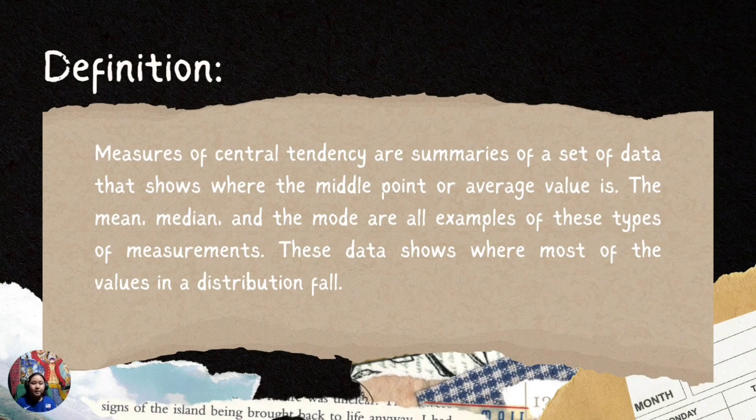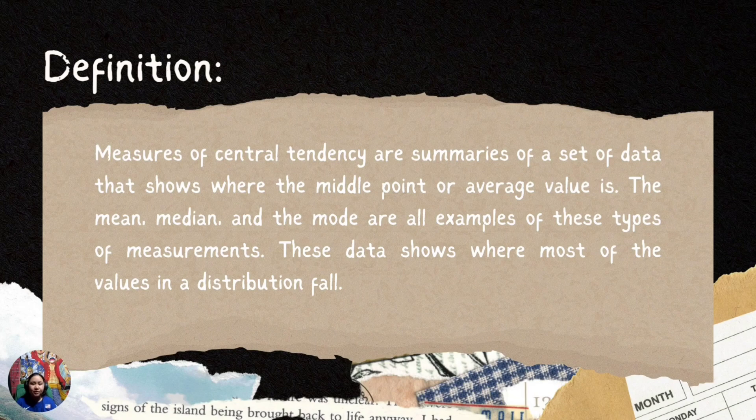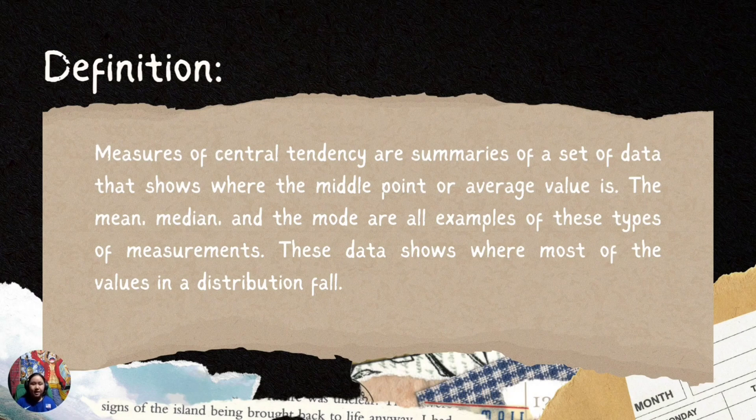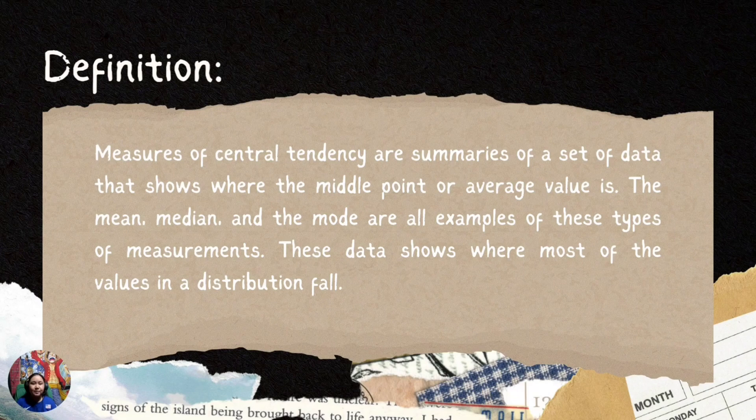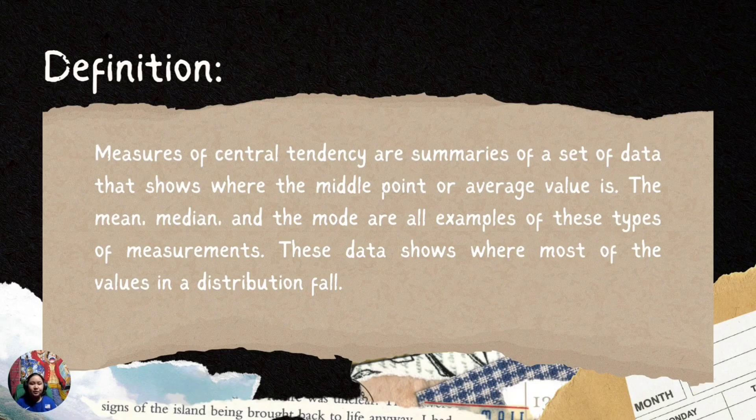Measures of Central Tendency are summaries of a set of data that shows where the middle point or average value is. The mean, median, and mode are all examples of these types of measurements. This data shows where most of the values in a distribution fall.